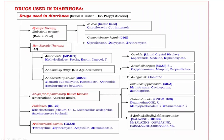The fourth anti-diarrheal drug category is Probiotics. The mnemonic is BLS: B for Bifidobacterium bifidum, L for Lactobacillus acidophilus, S for Saccharomyces boulardii.